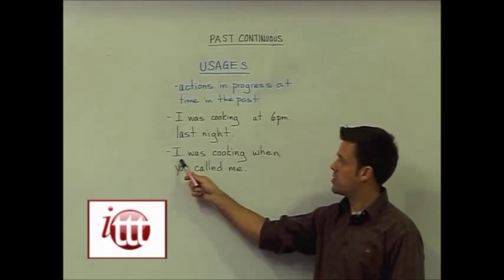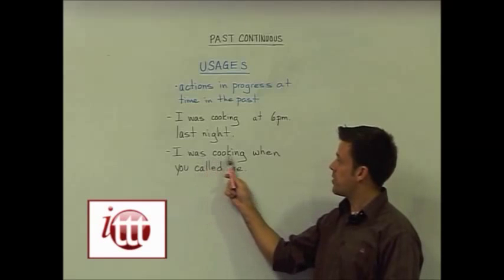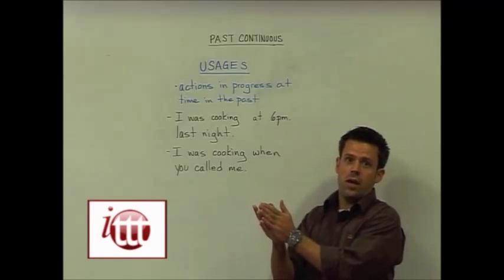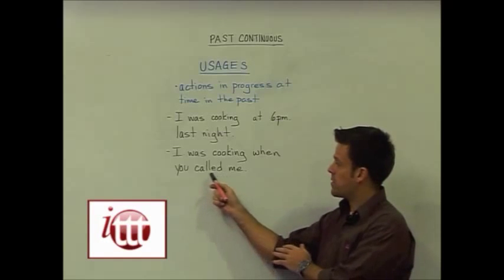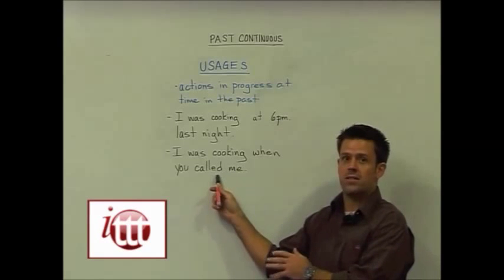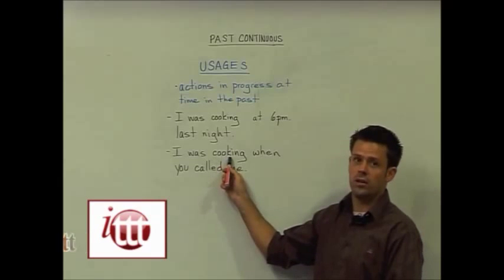Now I could also say I was cooking when you called me. It's the continuation of an action that happened at a particular time. That particular time needs to be conjugated into the past simple tense, as it wasn't continuing. Rather, the cooking was continuing.